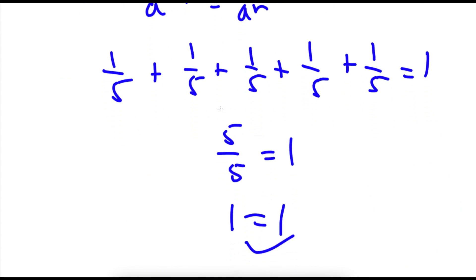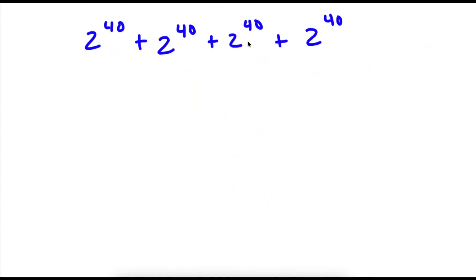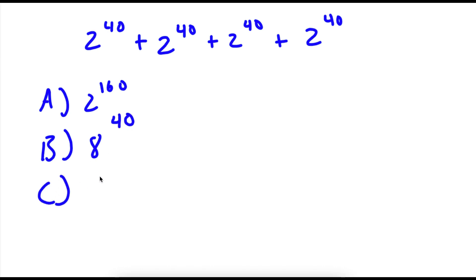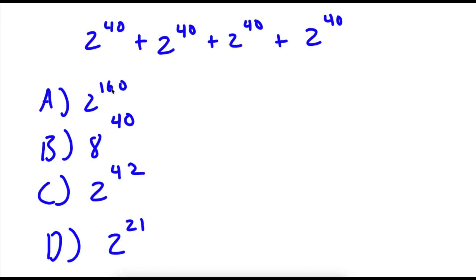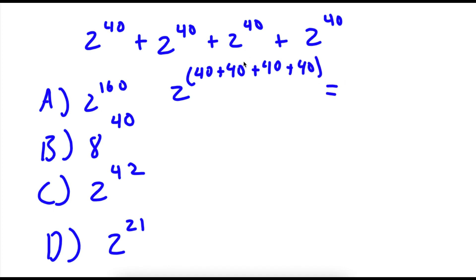Now it's time for the bonus problem. We have 2 to the power of 40 plus 2 to the power of 40 plus 2 to the power of 40 plus 2 to the power of 40. There are four answer choices. Answer choice A is 2 to the power of 160. Now how people get A is they keep the base the same and simply add the exponents: 40 plus 40 plus 40 plus 40 equals 160, giving 2 to the power of 160. But this method is actually wrong — you cannot add exponents like that.